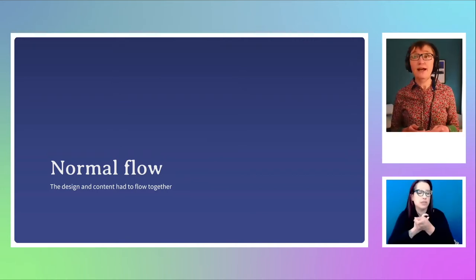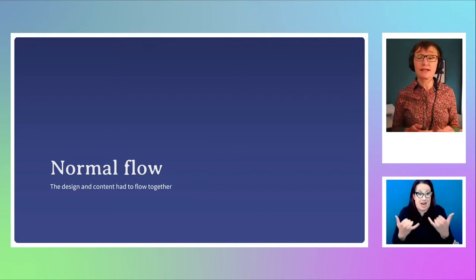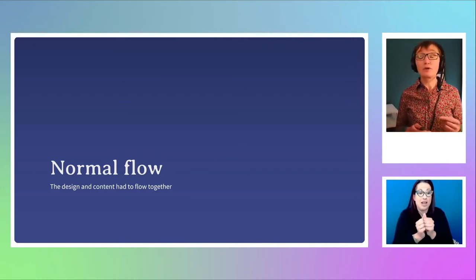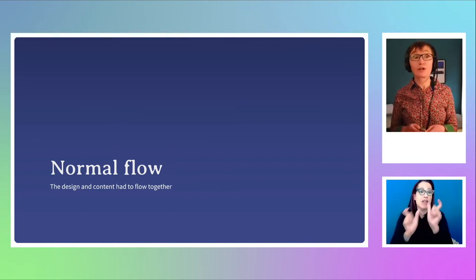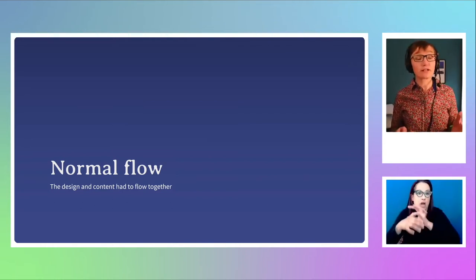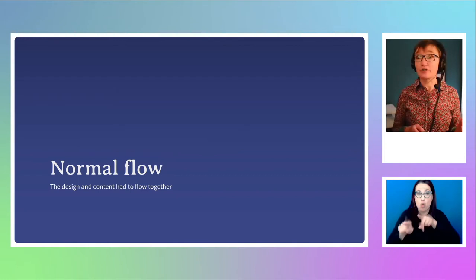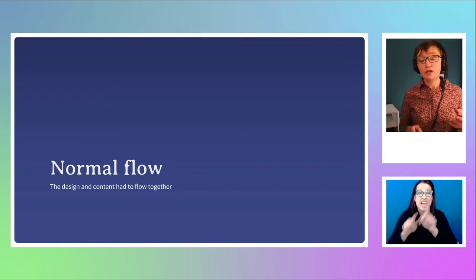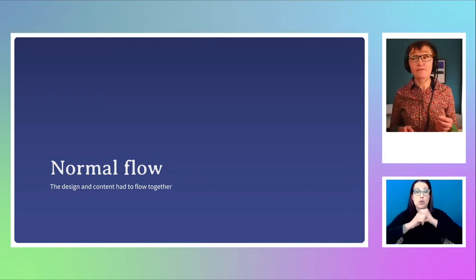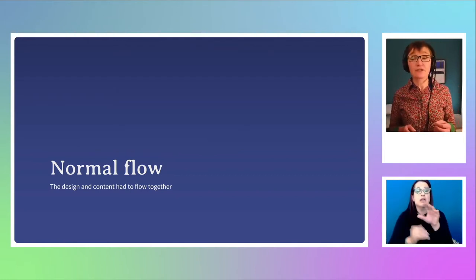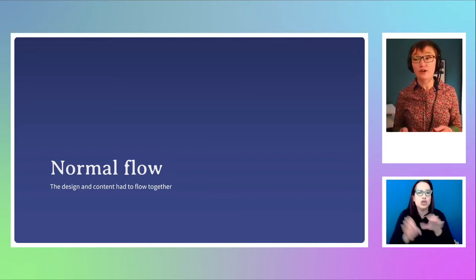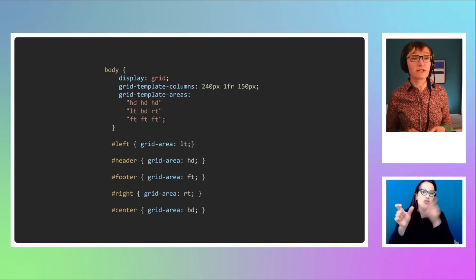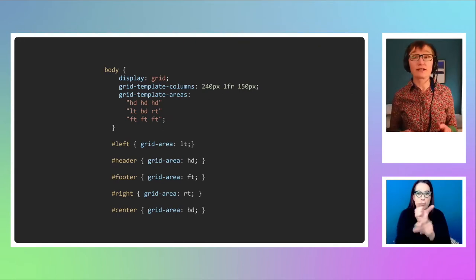But now, with Grid in particular, we really can have a layout that's separate from its content. We can reorder those things, we can do that at different breakpoints. The restriction of source order affecting layout is essentially gone. We can do our Holy Grail and switch our columns around any way we want with just these few lines of CSS. I'm showing the CSS for the Holy Grail layout using Grid.